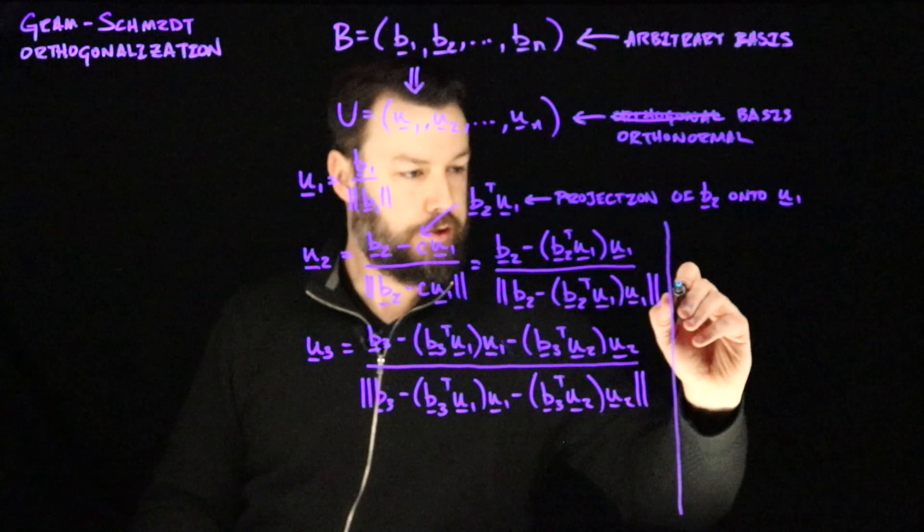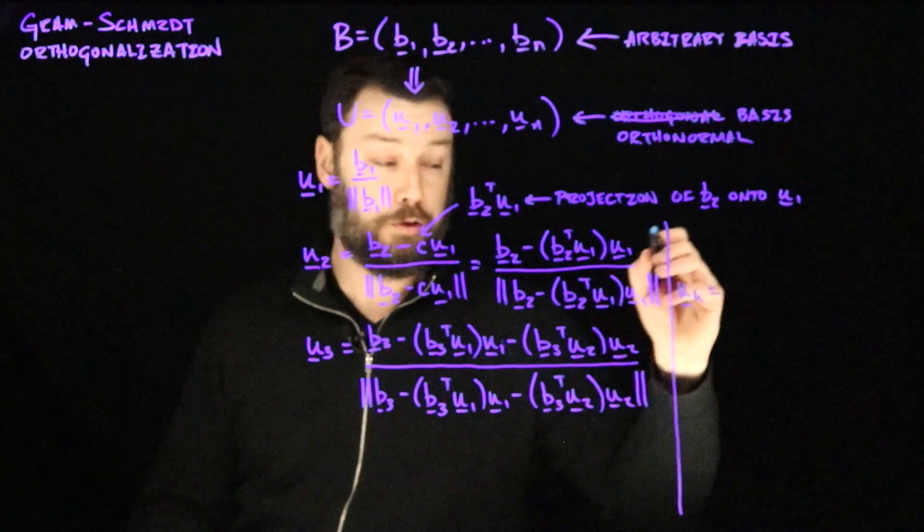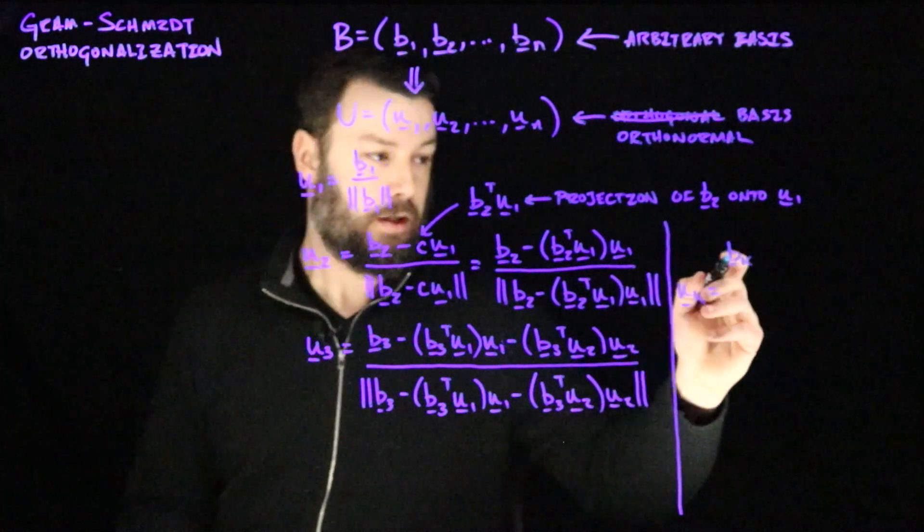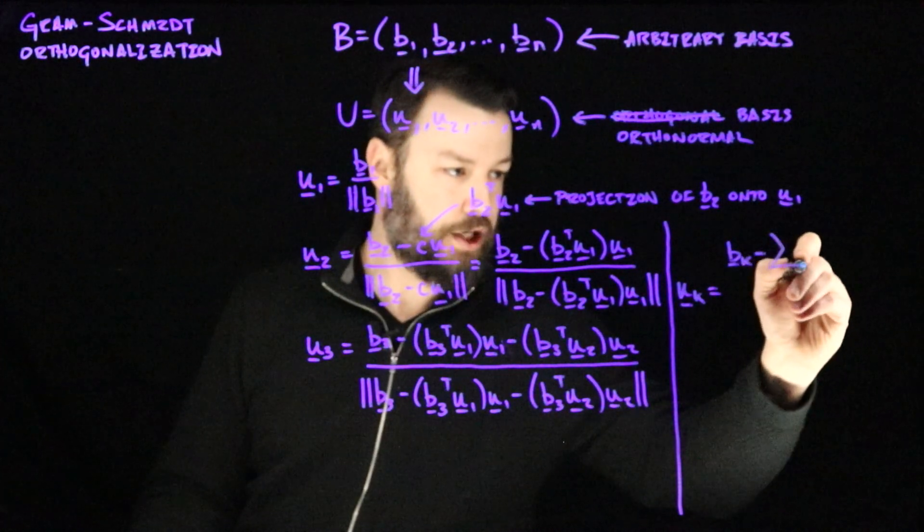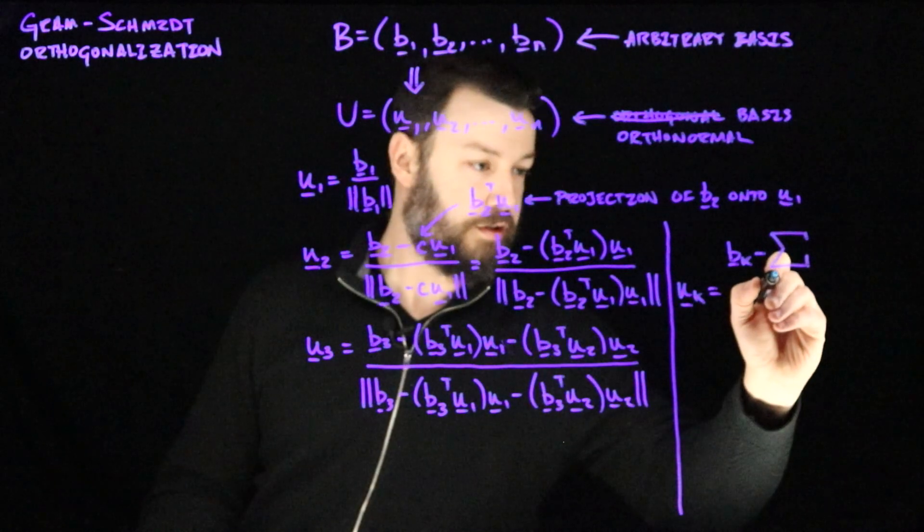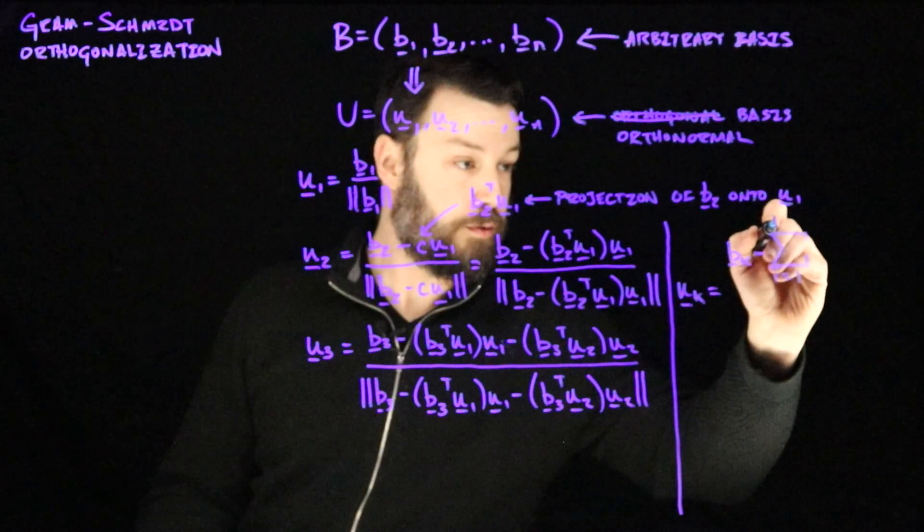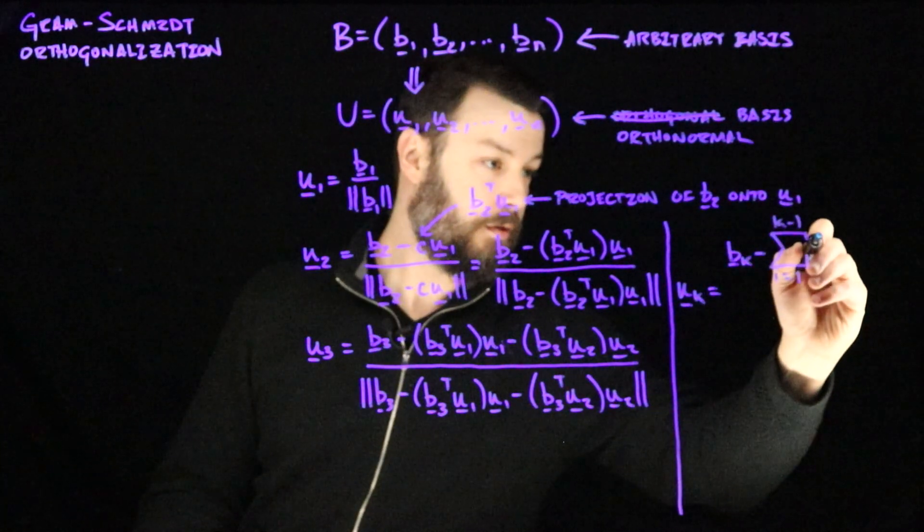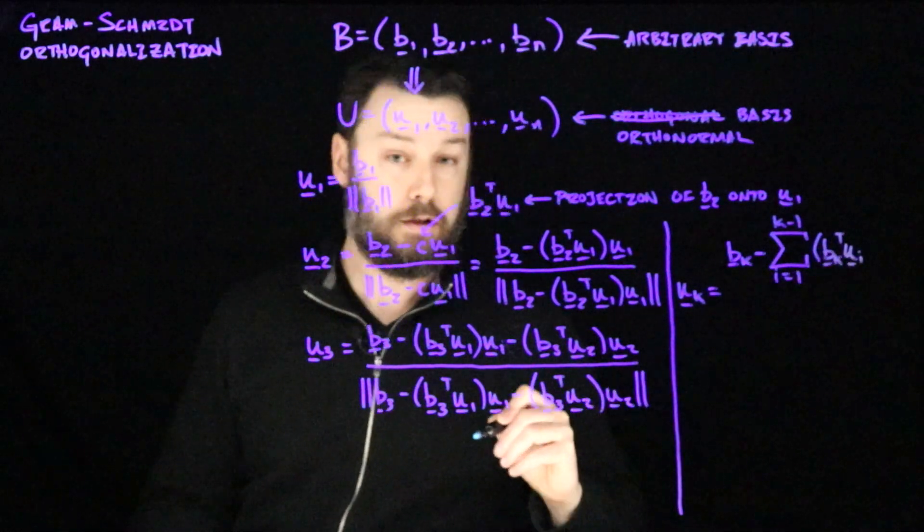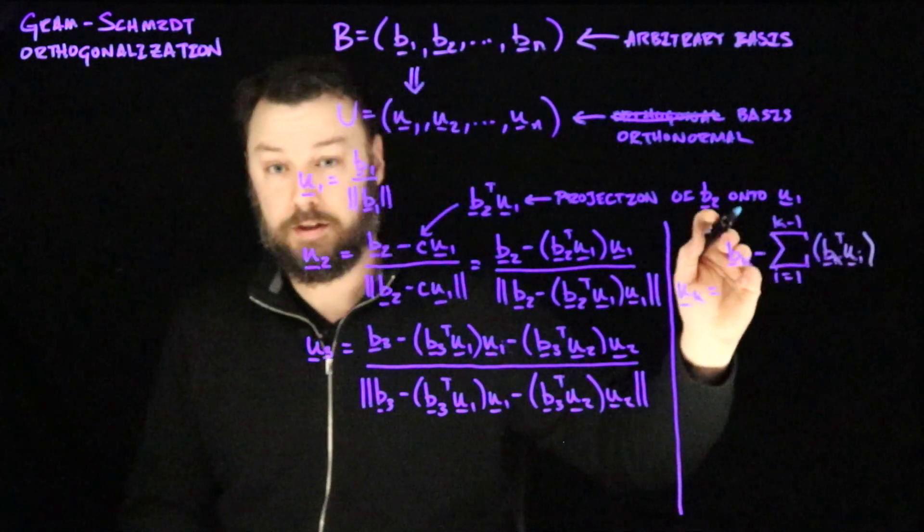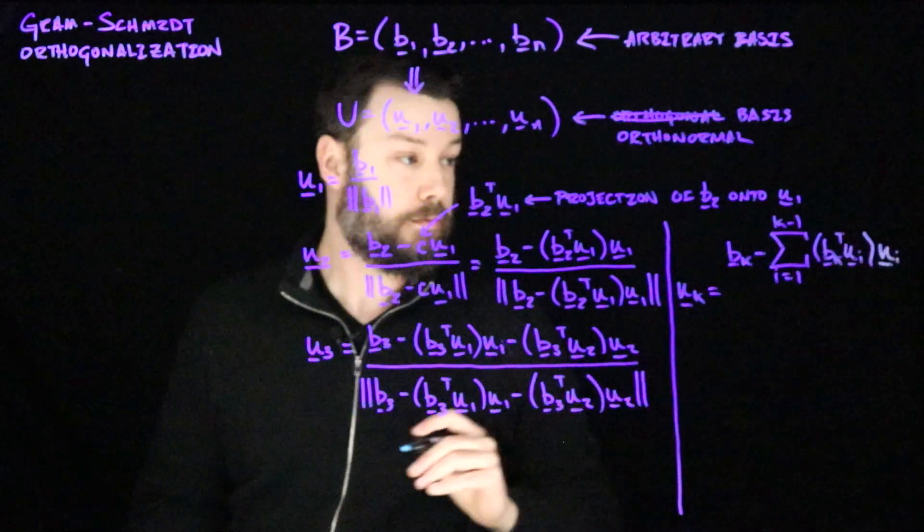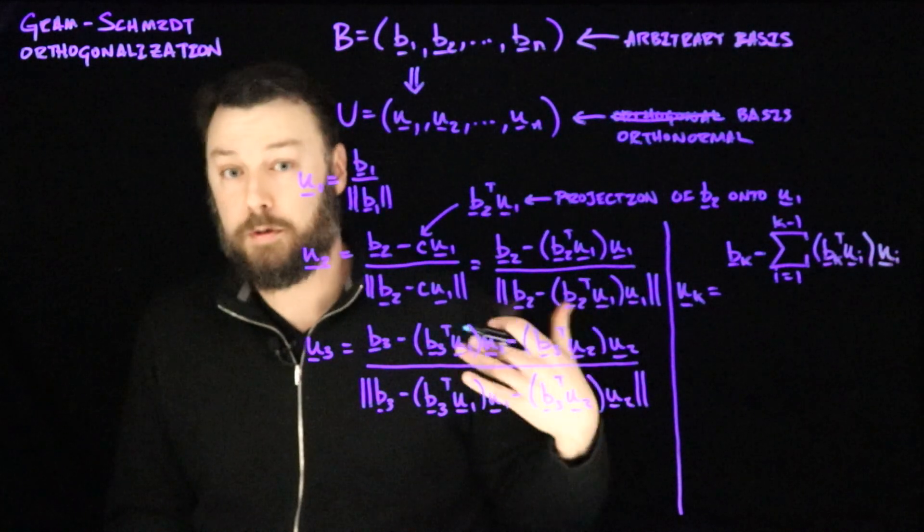We would say that uk is equal to bk. So the kth u starts with the kth b, and then we subtract from it the projection of bk onto all of the previous u's. So we could say i equals 1 to k minus 1, all the previous ones, of bk transpose ui projected onto the previous, so all of the k minus 1 previous u's, and then we scale it by that ui. And now this whole thing needs to be divided by its norm so that it has length 1.